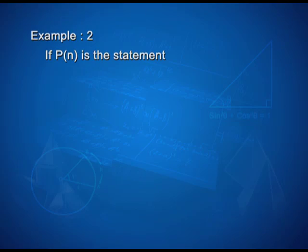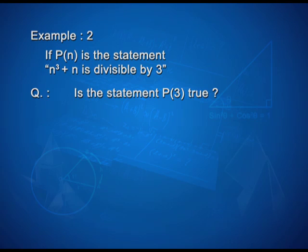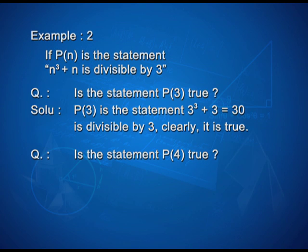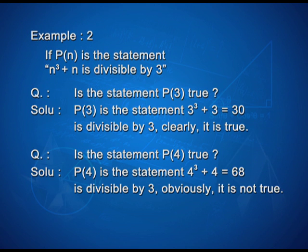If p(n) is the statement: n³+n is divisible by 3. Let us check whether p(3) is true. p(3) is the statement: 3³+3 = 27+3 = 30 is divisible by 3 — clearly a true statement. Now let us check p(4): 4³+4 = 68 is divisible by 3 — obviously it is not true.